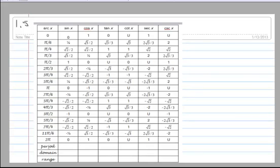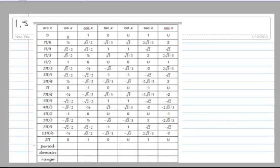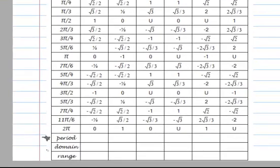In this lesson, we want to analyze this chart, and when we're all done analyzing the chart, we're going to come up with the period, the domain, and the range for sine, cosine, tangent, cotangent, secant, and cosecant. The range we'll forego for some of these until we get to chapter 2, but some of the other stuff we will cover. Let's start with the period.